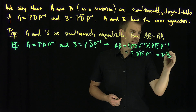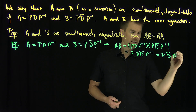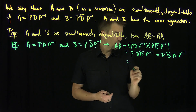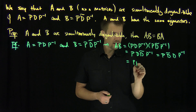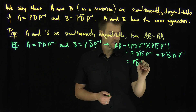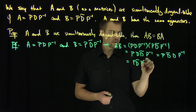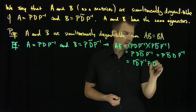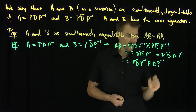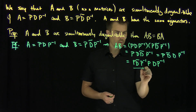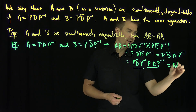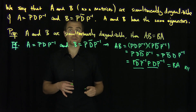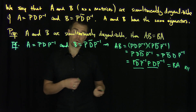Since D and D-tilde commute because they're diagonal matrices, this equals PD-tilde D P inverse. Splitting this as PD-tilde P inverse times PDP inverse gives us B times A. So simultaneously diagonalizable matrices commute with one another.